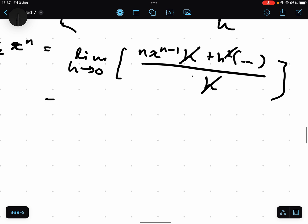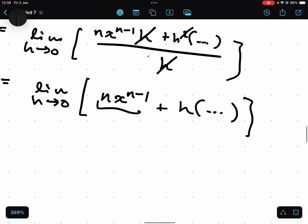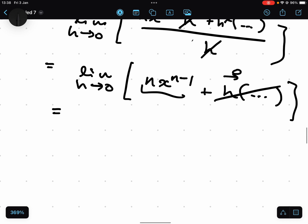So we're left with this limit over here, nx to the n minus one, as you can see, plus h times just a bunch of other things we're not really concerned about. Now, as h goes to zero, this also goes to zero. And if that goes to zero, that means this is just going to go away. You can just plug in zero, basically. So really, and this thing doesn't depend on h at all. So that means you're just left with nx to the n minus one. And there you go.